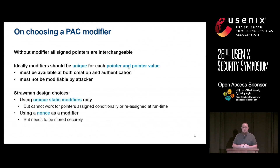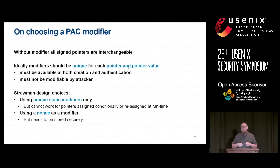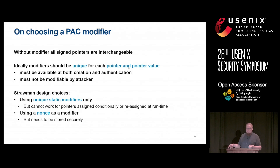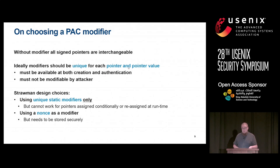Some strawman design choices: we could statically assign unique modifiers at compile time, but this isn't feasible except for trivial programs — conditionally assigned or runtime-reassigned pointers make this impossible. Another approach would be using a nonce every time you create a pointer, but then you need a mechanism to track which nonce to use at each use site. And essentially, if you can do that, you could just as well have secured the pointers in the first place, so why use a nonce at all?